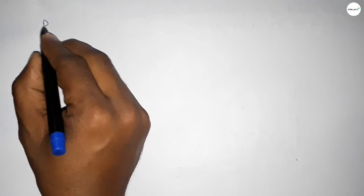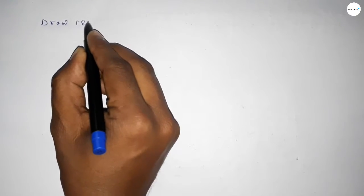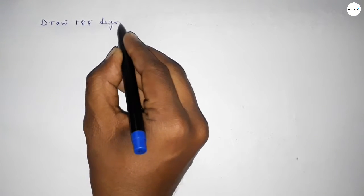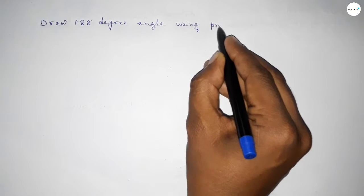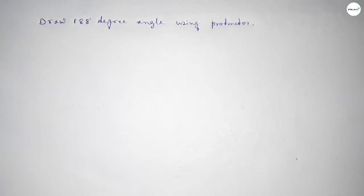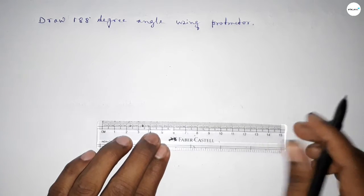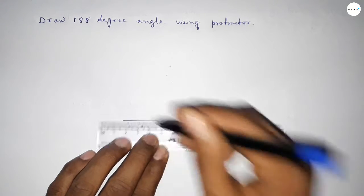Hi everyone, welcome to SSR Classes. Today in this video we have to draw 188 degree angle by using protractor. So let's start the video. First of all, we have to draw here a straight line of any length.